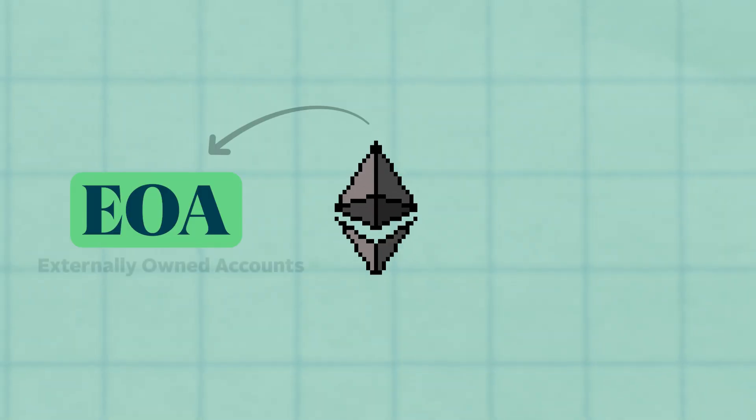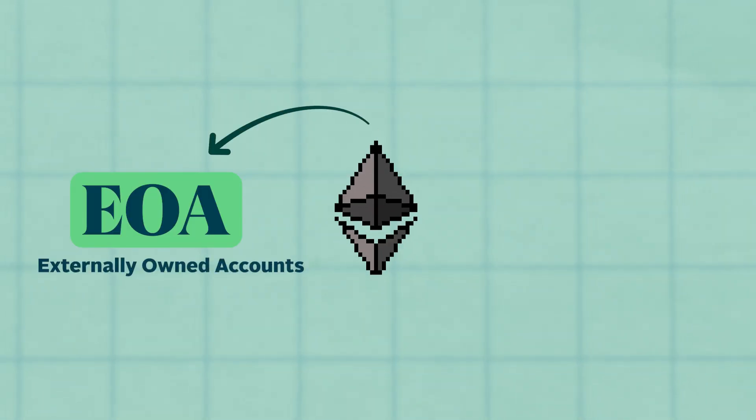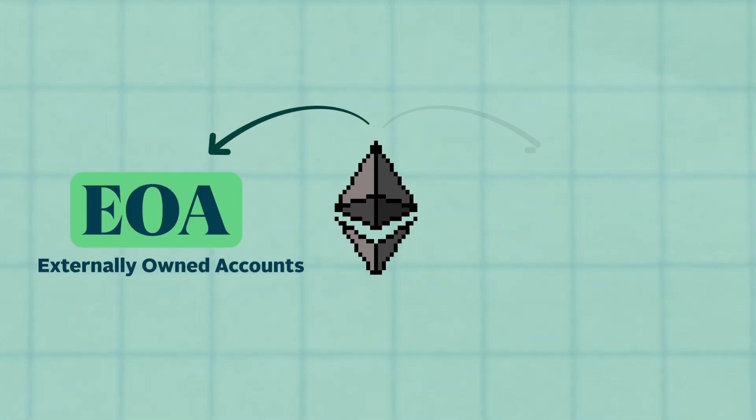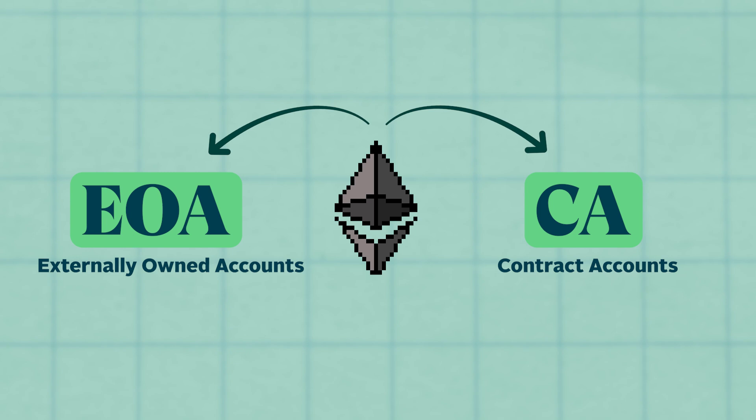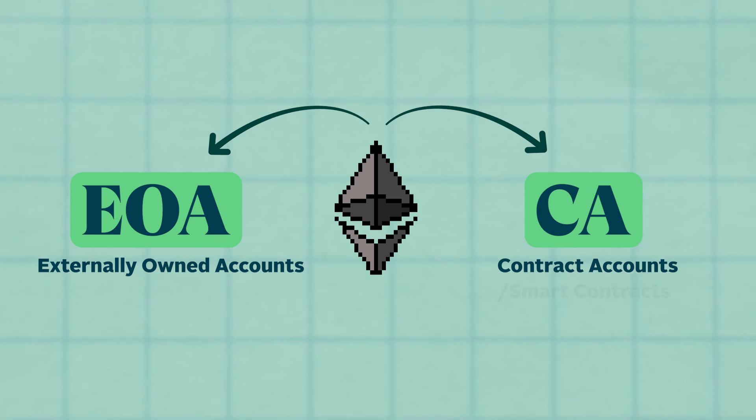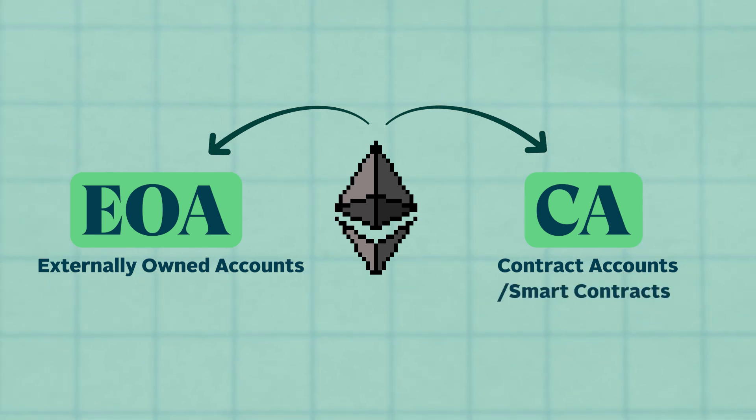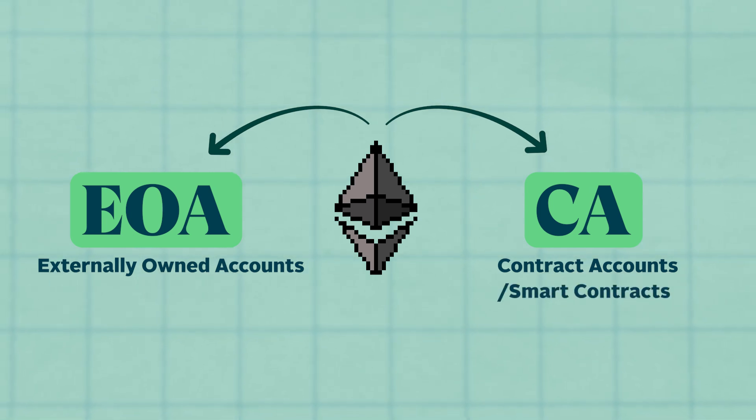Before we can understand what account abstraction is, we first need to understand the concept of accounts on Ethereum. There are two different account types on Ethereum: EOAs, or externally owned accounts, and contract accounts, CAs, otherwise known as smart contracts.